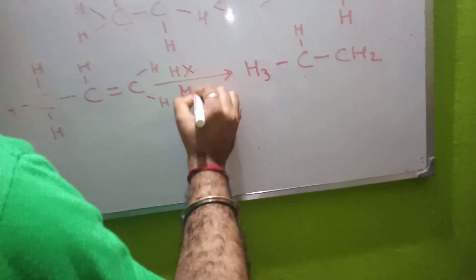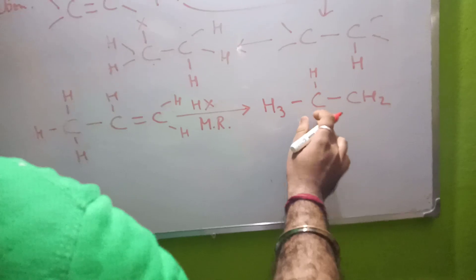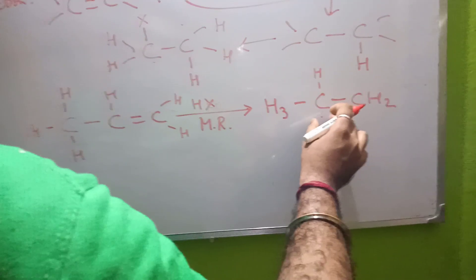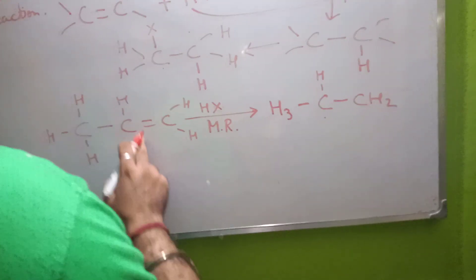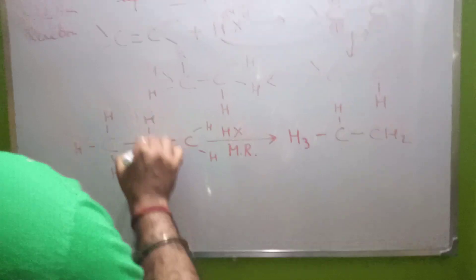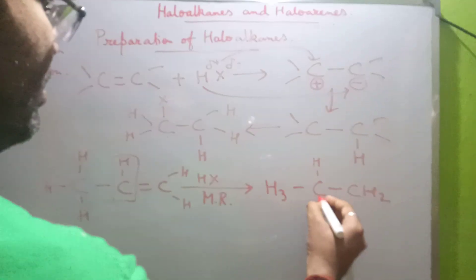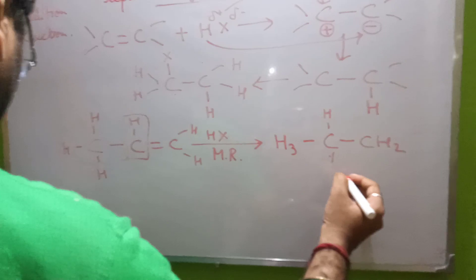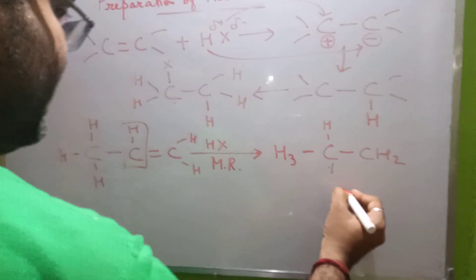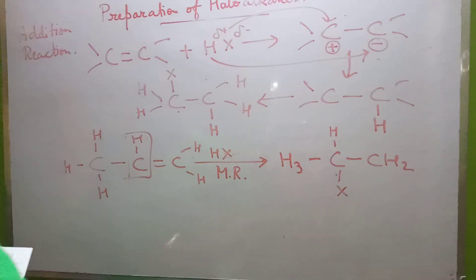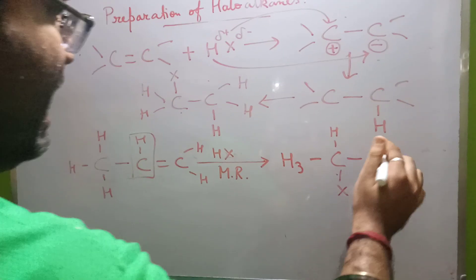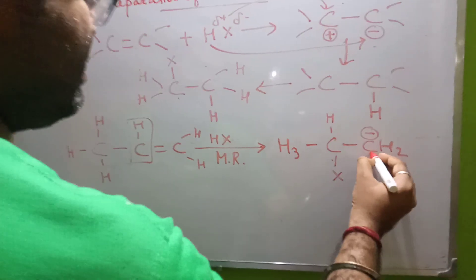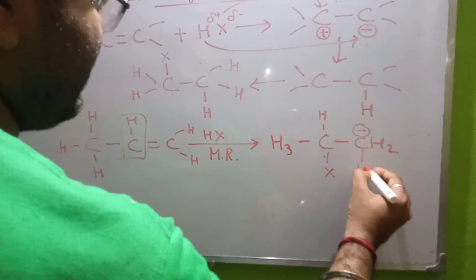According to Markovnikov's rule, the carbon atom which is having less number of hydrogen atoms — between these two carbon atoms, this carbon is having fewer hydrogens. So the halogen will be coming and getting attached here, giving it a minus charge, and the hydrogen comes over and gets attached to the other carbon.